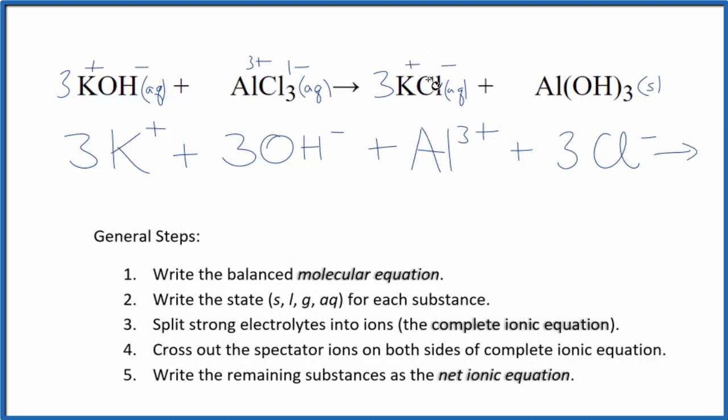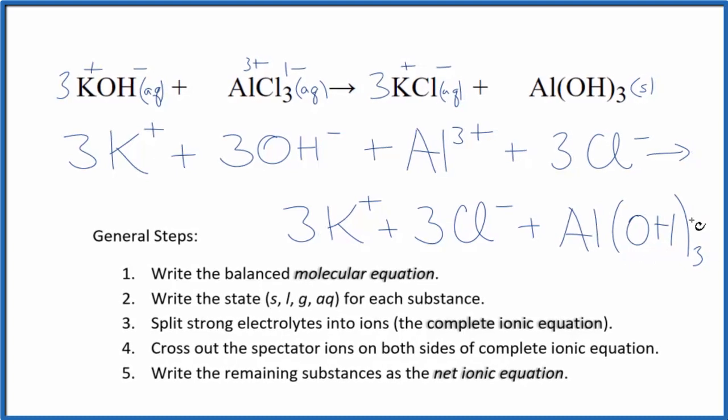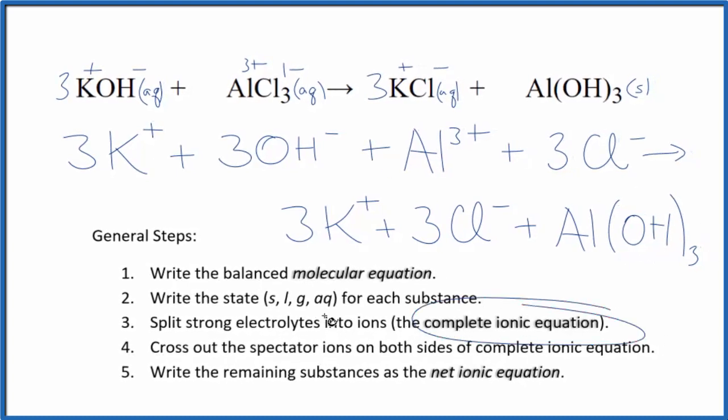We have plus and minus here. So we have three potassium ions in the products, just like the reactants, plus three chloride ions. And then for aluminum hydroxide, since it's a solid, we don't split solids apart in net ionic equations. We just keep that together as Al(OH)3. So this is the complete ionic equation.